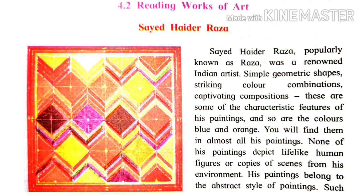Saeed Haider Raza, popularly known as Raza, was a renowned Indian artist. Simple geometric shapes, striking color combinations, captivating compositions — these are some of the characteristic features of his paintings. And so are the colors blue and orange — these two colors are a distinctive feature of his paintings.